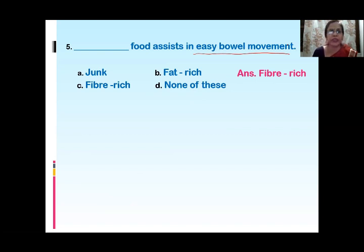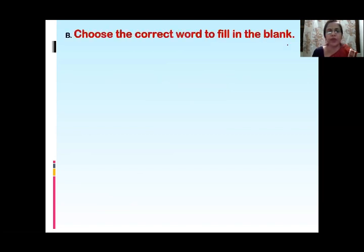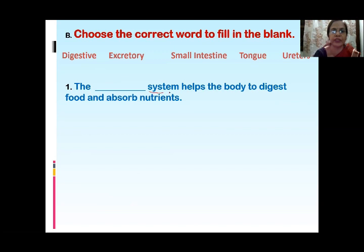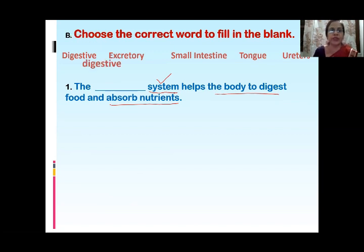Now, the next section: choose the correct word to fill in the blank. Some words are given from which you have to choose the correct answers. Question number one: The Dash system helps the body to digest food and absorb nutrients. It is asking for the system which helps in the process of digestion and absorbs nutrients. The answer is the digestive system.